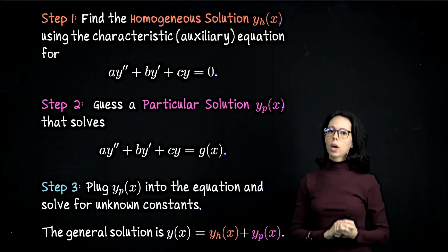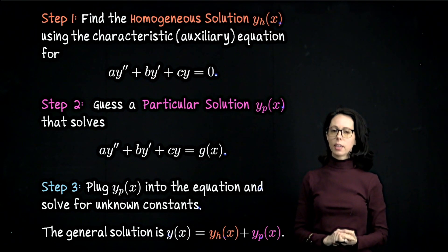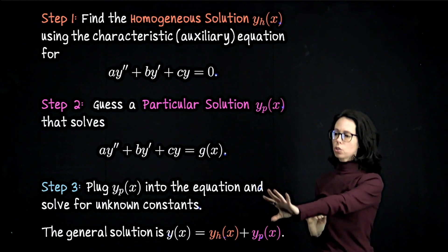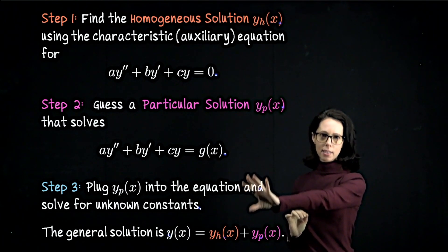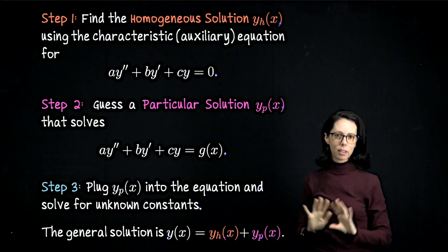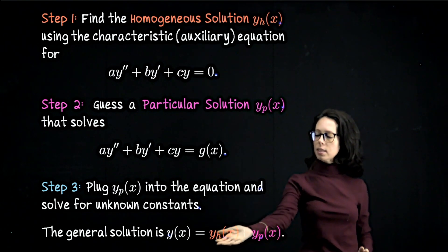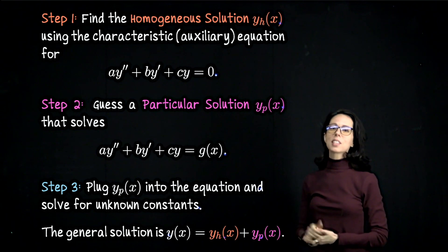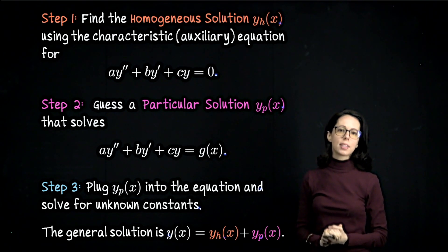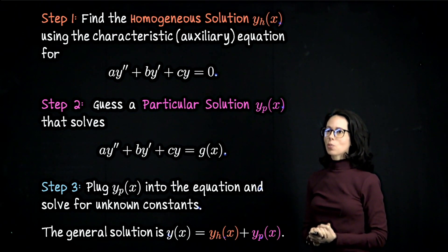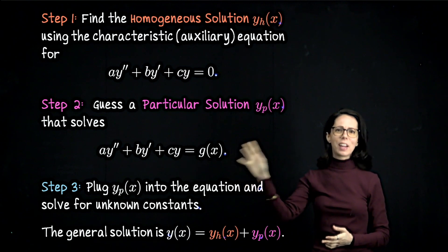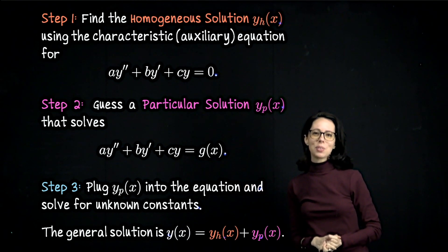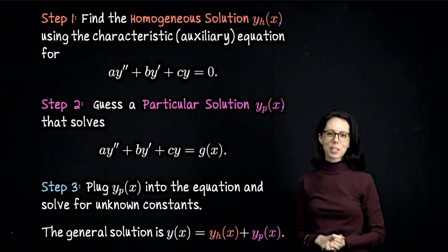You should only have two constants in your general solution and they both come from step one. The particular solution, when you plug it in during step three and make it work, has no remaining constants. Don't worry too much right now if you don't understand how you'll make step two work — we will work through several examples so that you see how to guess a particular solution.